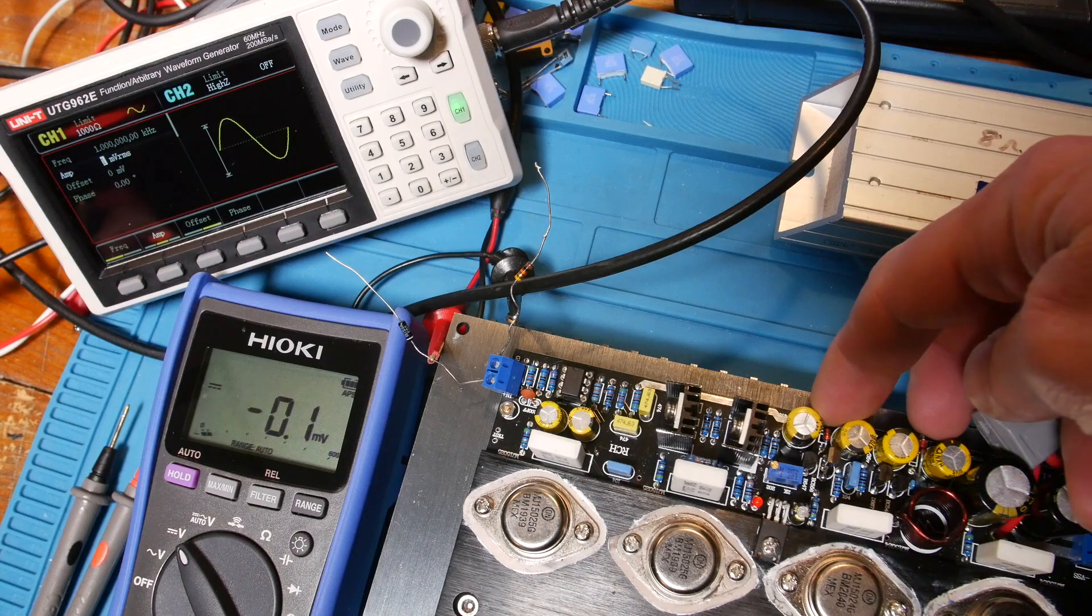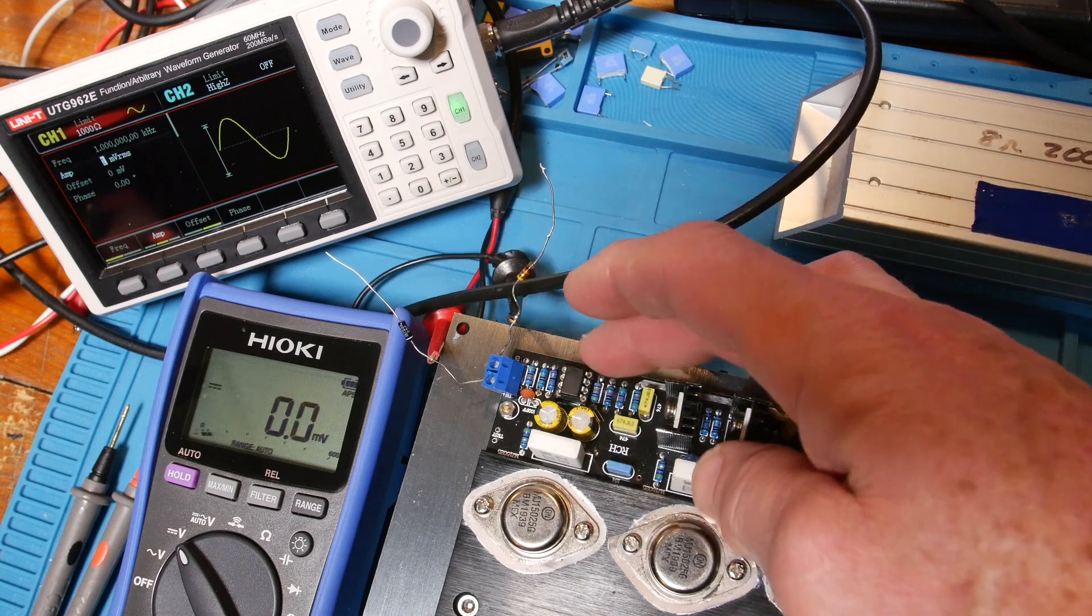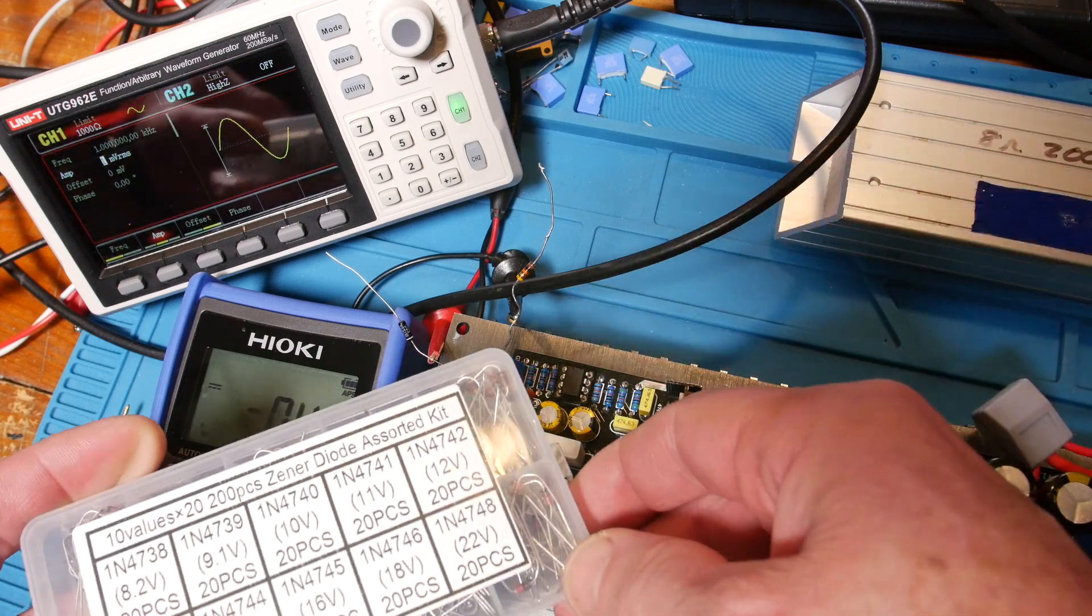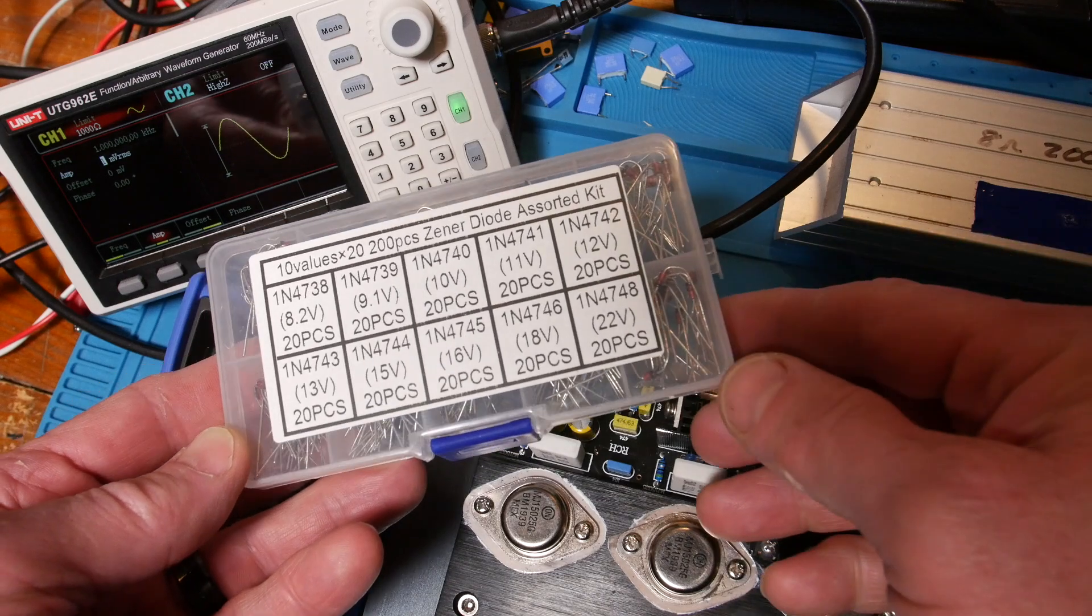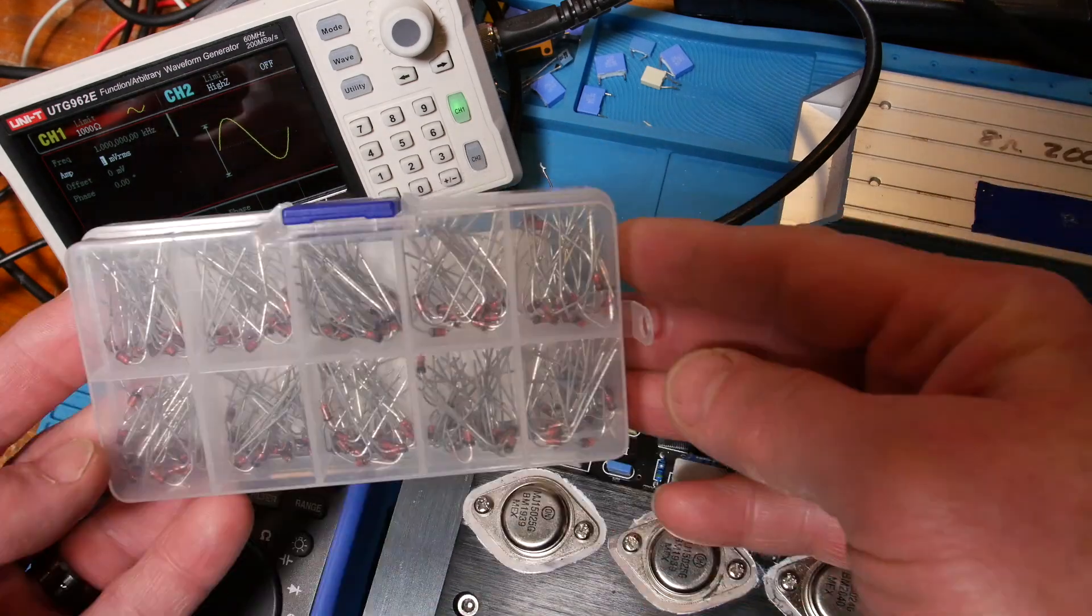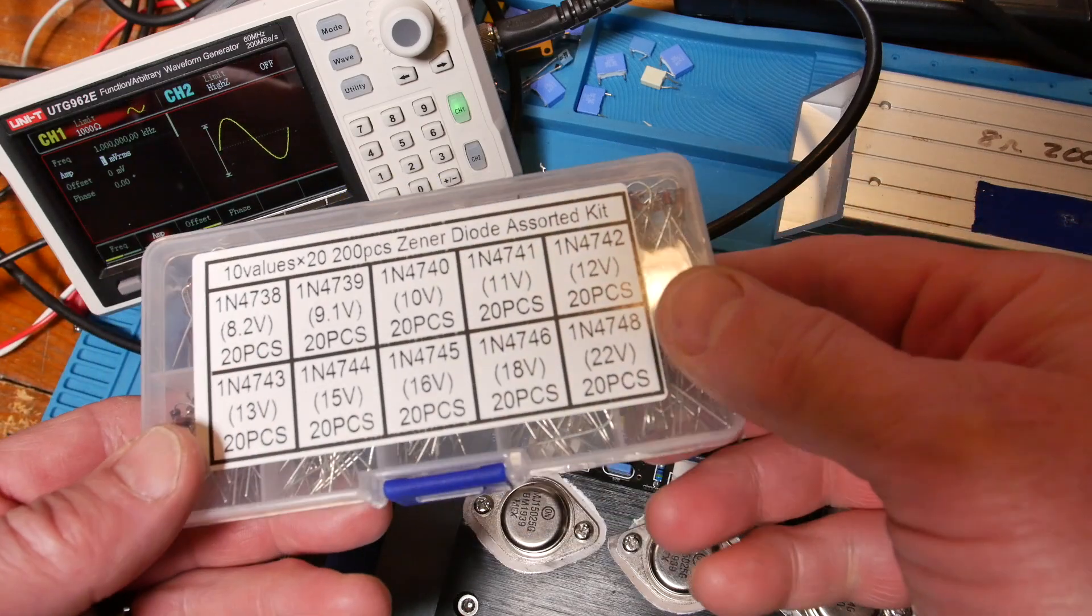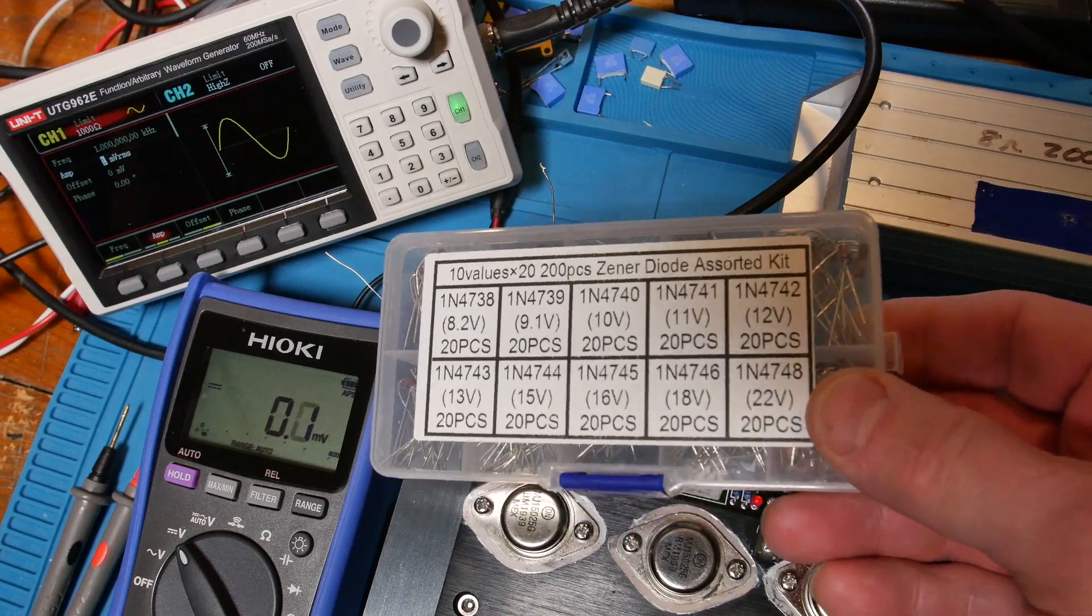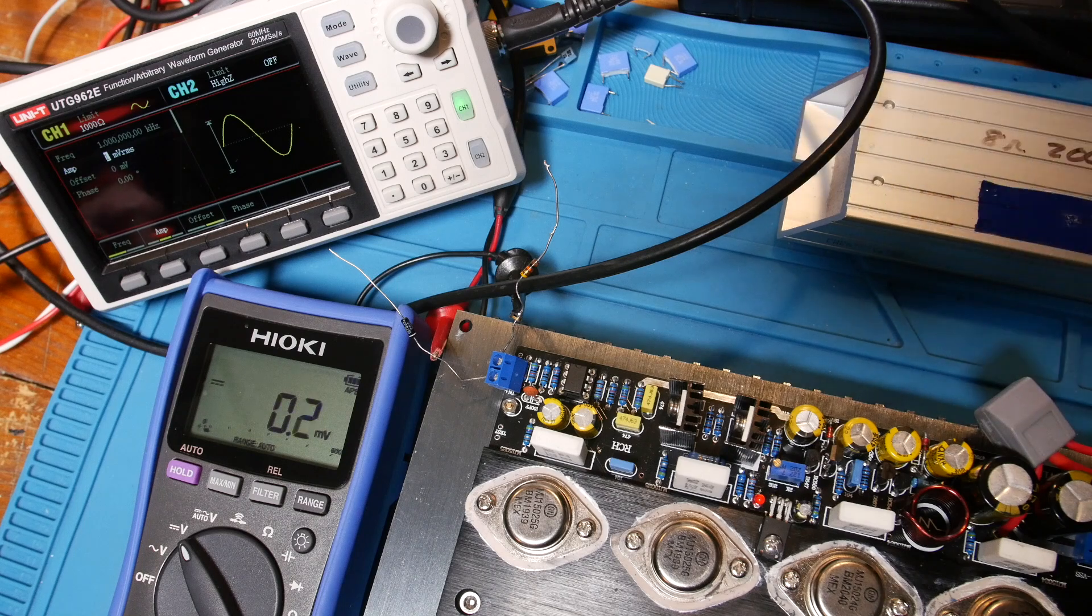Okay, so what I did is I changed these zener diodes in here to get pretty close to max amplitude I can get out of this NE5532. And I went to Amazon, bought this zener diode kit. I'll put the link down below. This is a pretty nice little kit. You can see how many zener diodes it has in there. I'll put the link down below on how much it cost me at the time.